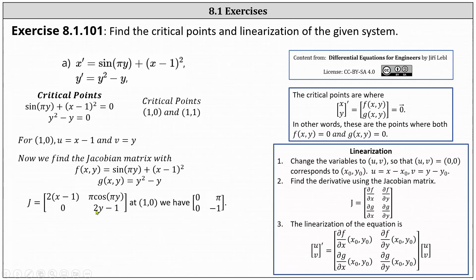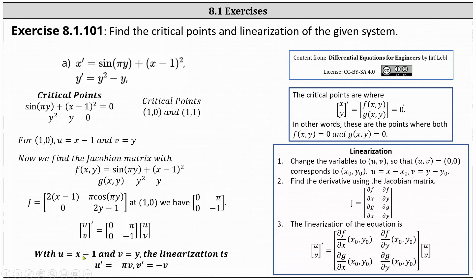Next, we evaluate the Jacobian at the critical point one comma zero, which gives us a two by two matrix with entries zero, pi, zero, negative one. Therefore, the linearization is the derivative of the vector u, v equals the two by two Jacobian matrix with entries zero, pi, zero, negative one, times the vector u, v. With u equal x minus one and v equal y, the linearization is u prime equals pi v, and v prime equals negative v.